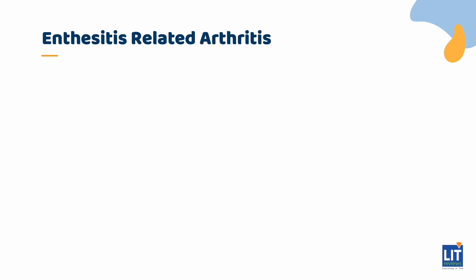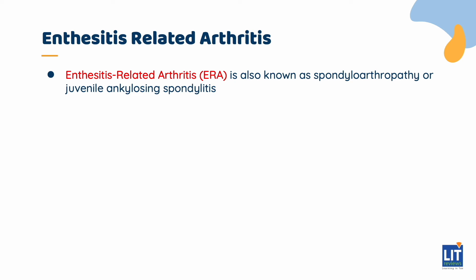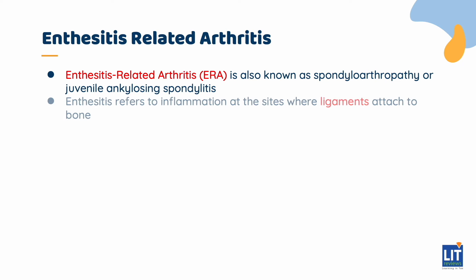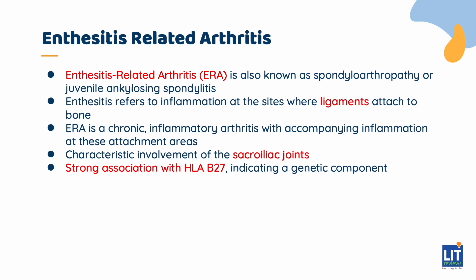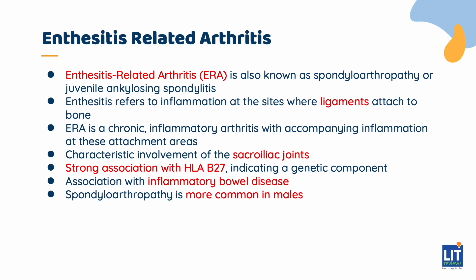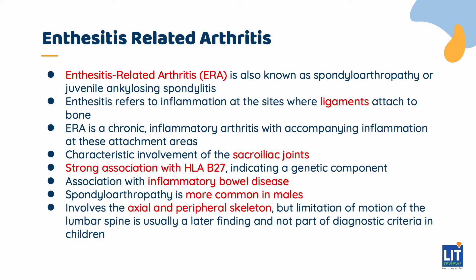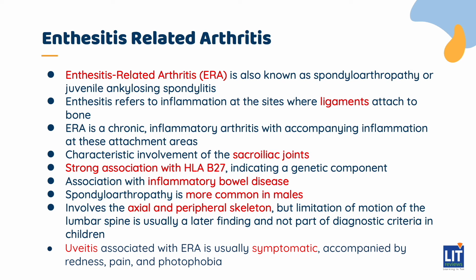The next type is enthesitis-related arthritis, also referred to as spondylarthropathy or juvenile ankylosing spondylitis. Enthesitis is inflammation at the sites of attachment of ligaments to bone. Sacroiliac joint involvement is characteristic. There is a strong association with HLA-B27, suggesting a genetic component, as well as an association with inflammatory bowel disease. Spondylarthropathy is more common in males and occurs in the axial and peripheral skeleton most commonly. Limitation of motion of the lumbar spine is usually a later finding and not part of the diagnostic criteria in children. The uveitis associated with enthesitis-related arthritis is usually symptomatic, accompanied by redness, pain, and photophobia.